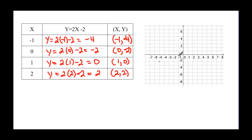Now we want to plot those points. (-1, -4): go to negative one then down to negative four. (0, -2): start at the origin and go down two. (1, 0): go over to one and stay right there on the x-axis. (2, 2): go over to two and then up two. We should feel like we did it correctly because all our points lie in a line.